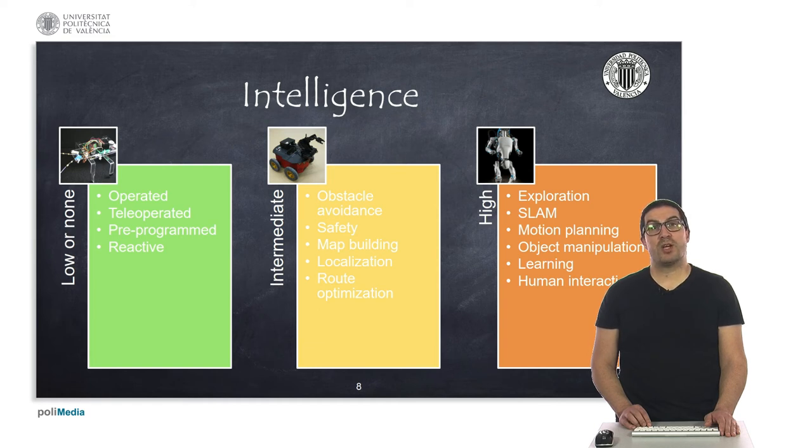And of course, there are robots with much higher degree of intelligence that include features such as exploration, simultaneous localization and map building or SLAM, motion planning, object manipulation, learning, human-robot interaction, among other features.